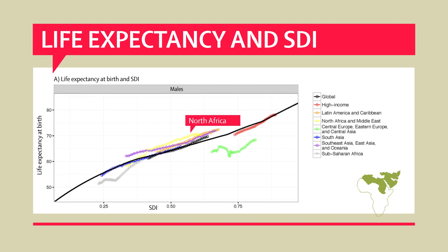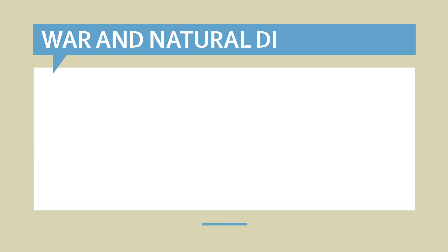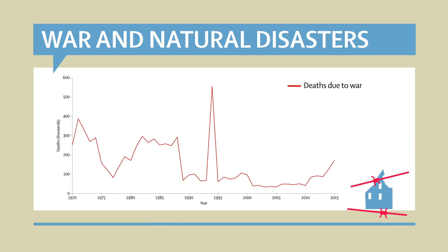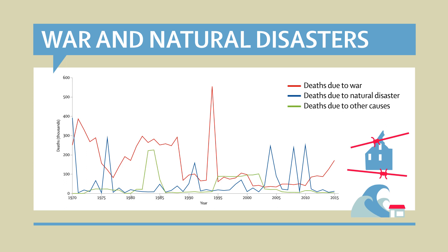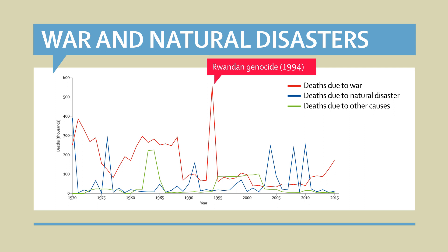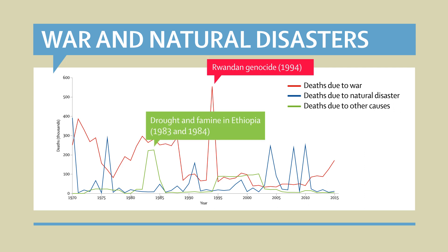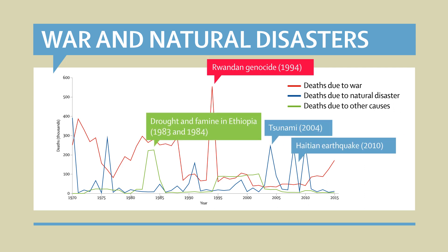North Africa has better life expectancy than that predicted by SDI. While there are disease-related deaths we can predict, there are also deaths due to war and natural disaster that we cannot. Mortality shocks show spikes in deaths due to genocide, drought, and earthquakes.